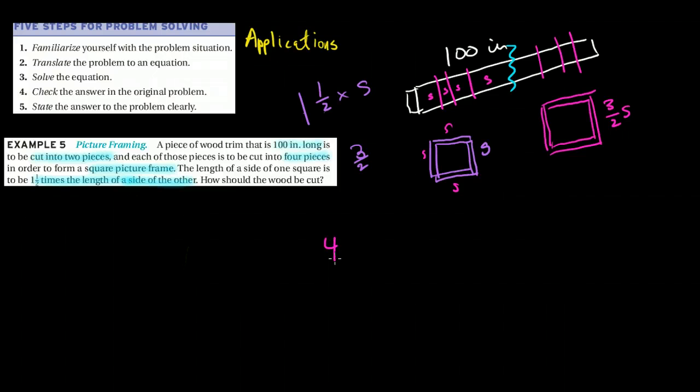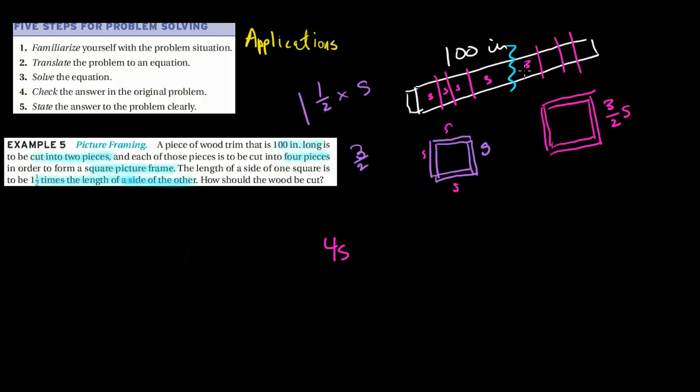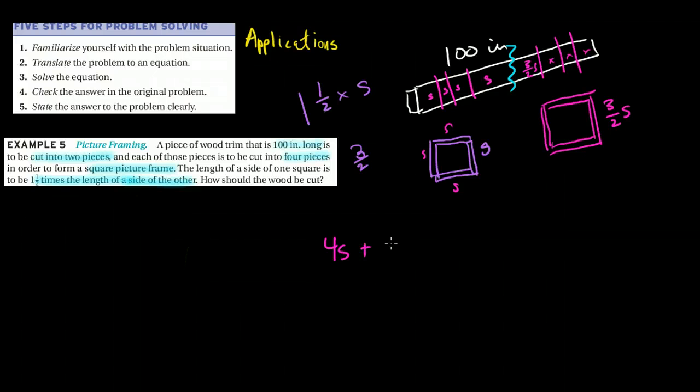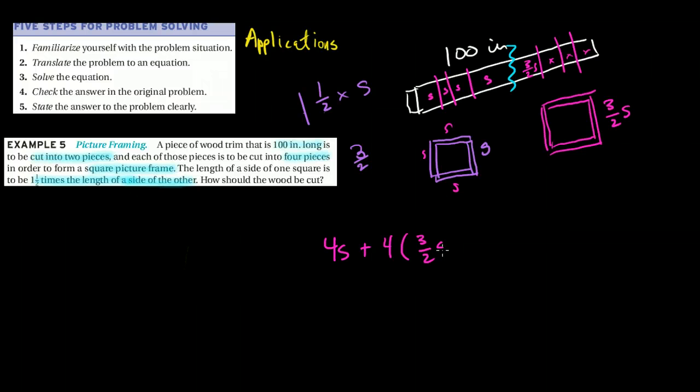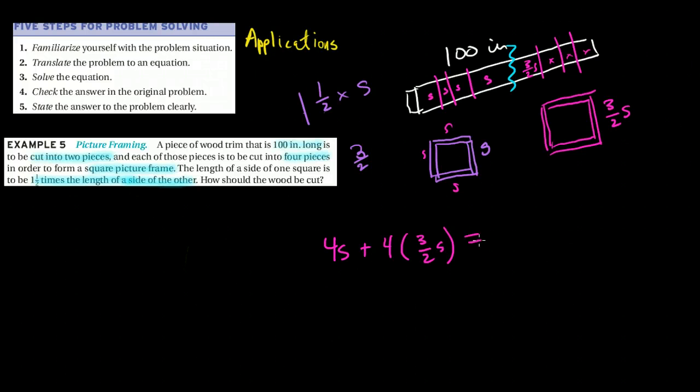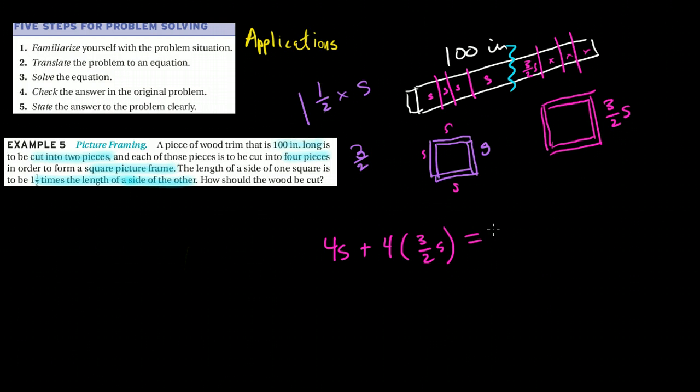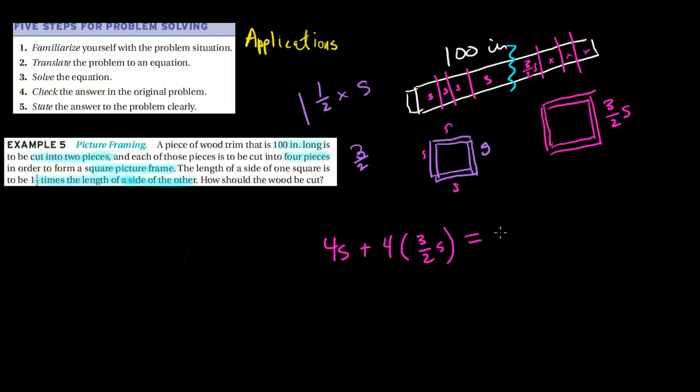That's how I get each of these sides here. So I have four s's. And then I know that this length is three halves of s. And so is this one, and so is this one, and so is this one. So I'm going to add to that four times three halves of s. And all of that together is going to be how long? It'll be 100 inches.